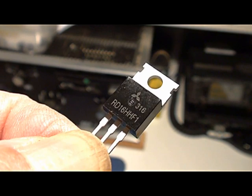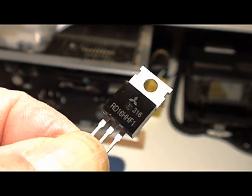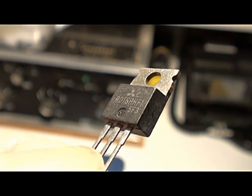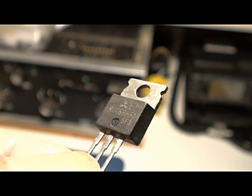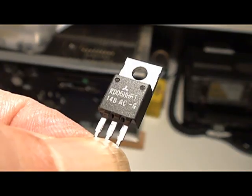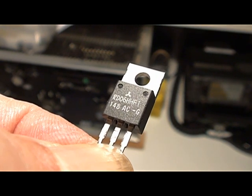Here is a view of the shiny RD16 HHF1. Here is a view of the dull version RD16 HHF1. It's not very clear. This is the genuine Mitsubishi RD06 HHF1.